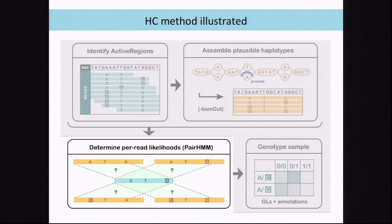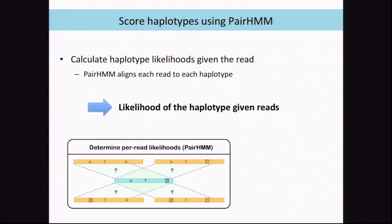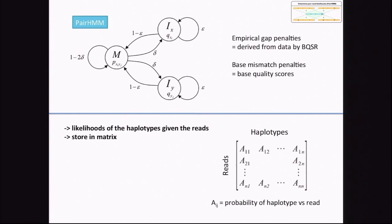Now that we've assembled our plausible haplotypes, we need to determine the per-read likelihoods using a pair HMM. Using a pair HMM we get the likelihood of the haplotype given the reads. The output of this is the likelihoods of the haplotypes given the reads, and we store all of these likelihoods in a matrix — the haplotypes given all of the reads.